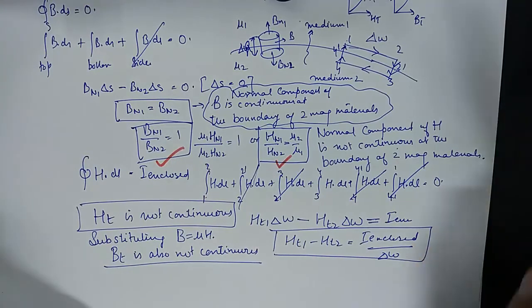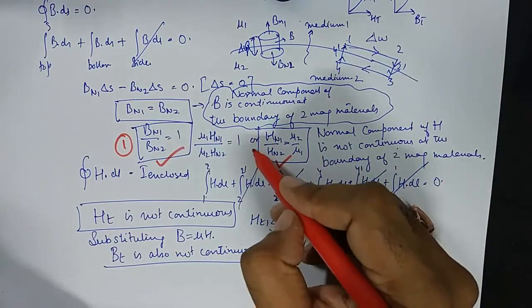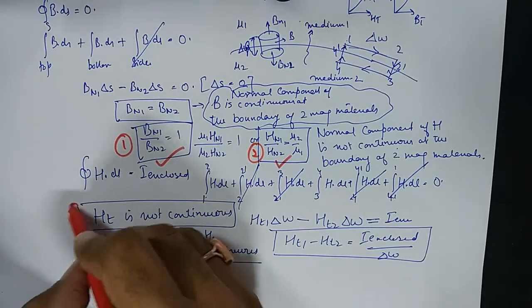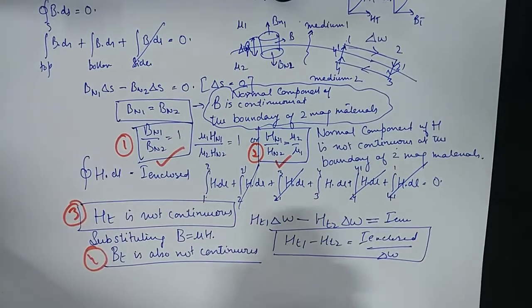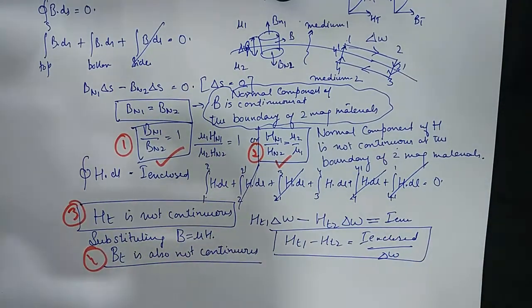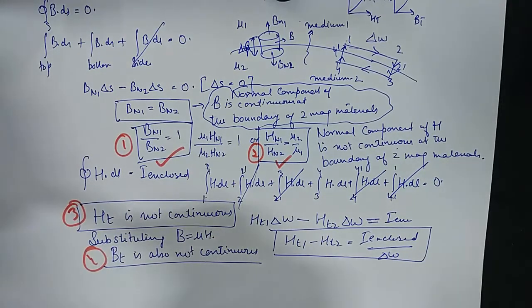So result number 1, result number 2, result number 3, result number 4 easy. And once we know what components are continuous, what components are not continuous, we will be able to find the resultant vectors easily at the boundary of two magnetic materials.